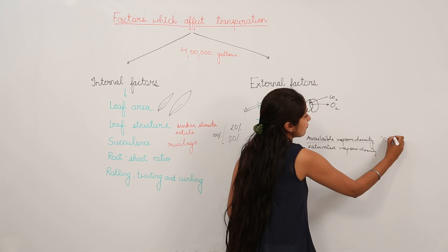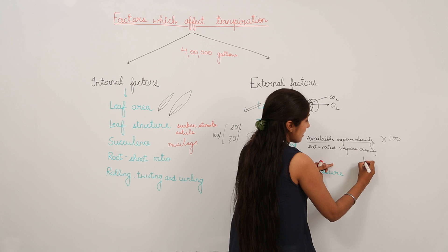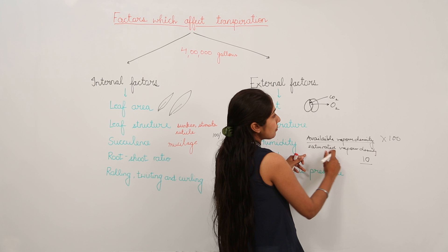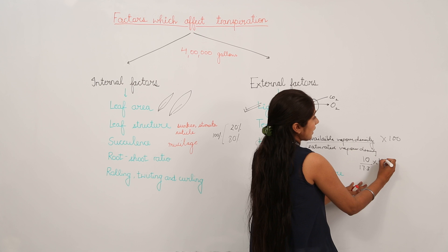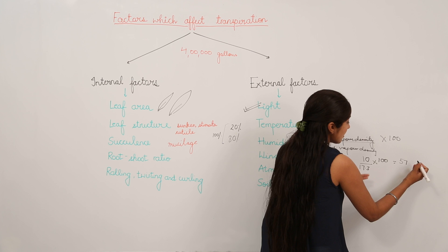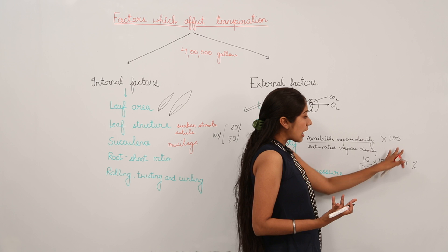For example, if available vapor density is 10 g/cm³ and saturated vapor density is 17.3 g/cm³, then multiplying by 100 gives approximately 57%. So we say the relative humidity of air is 57%.